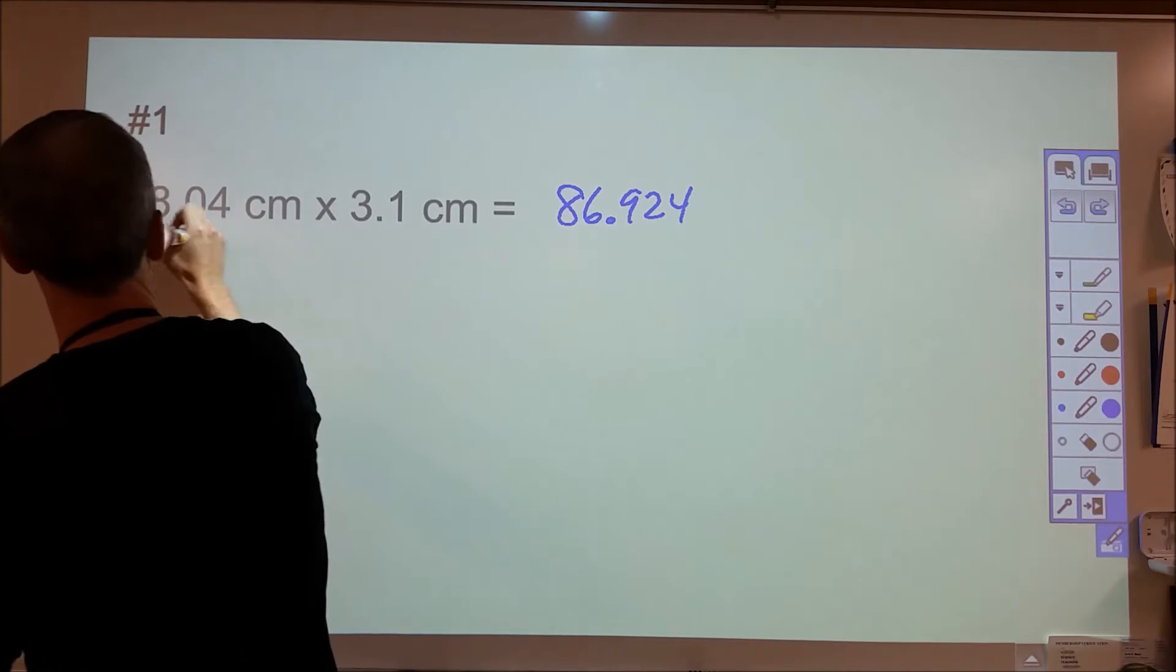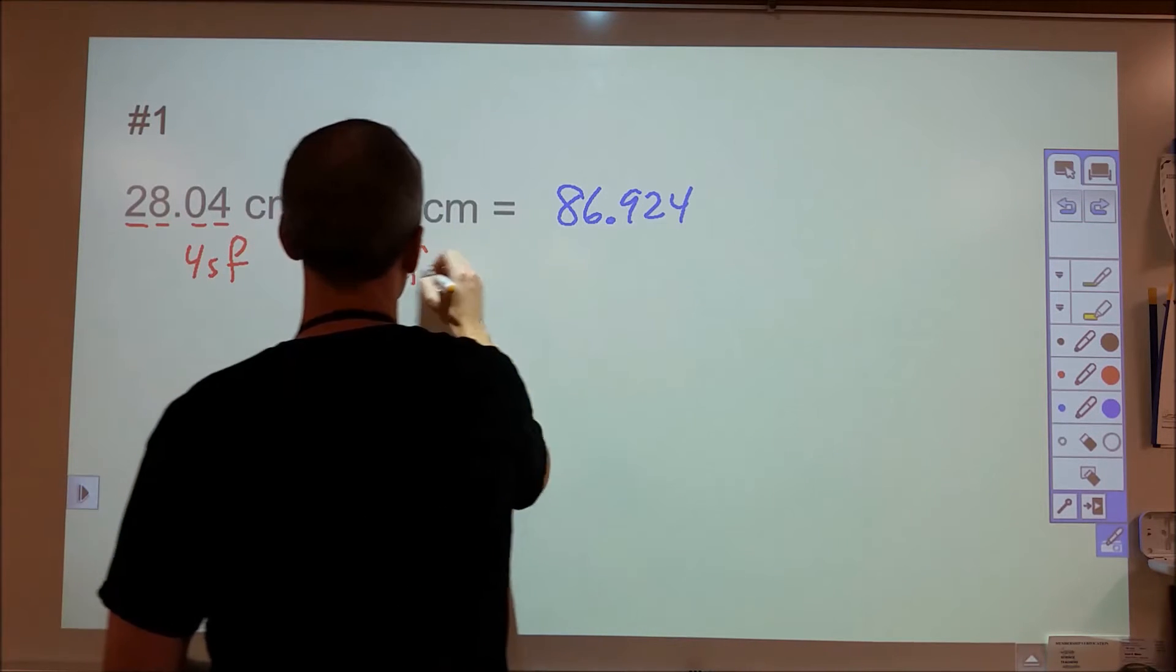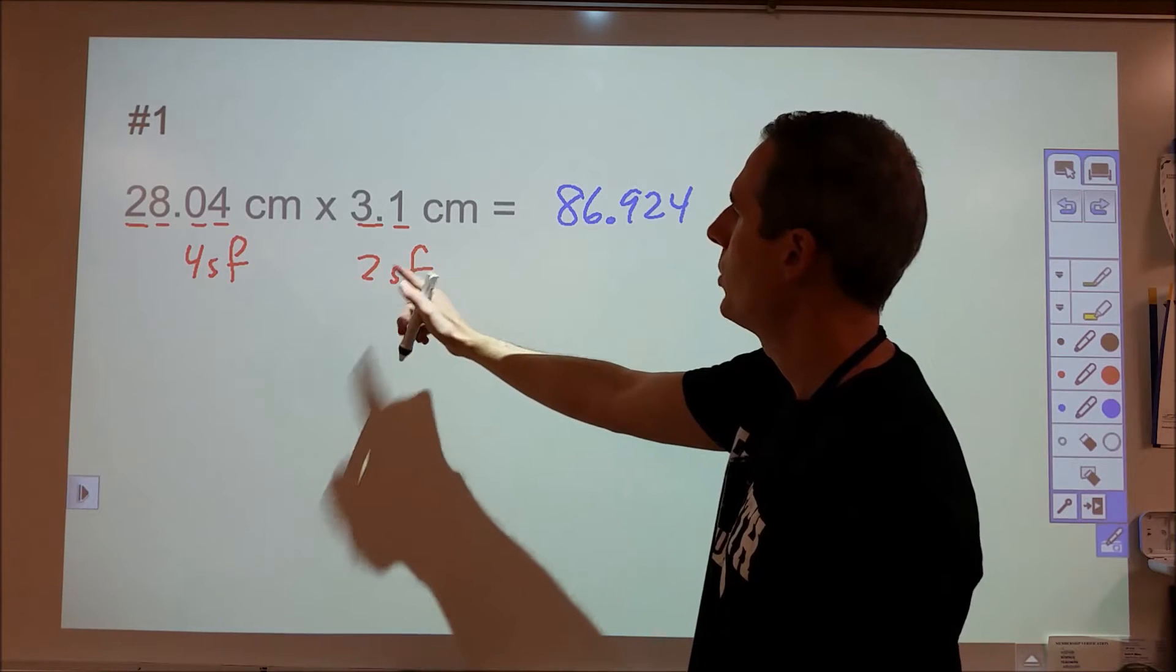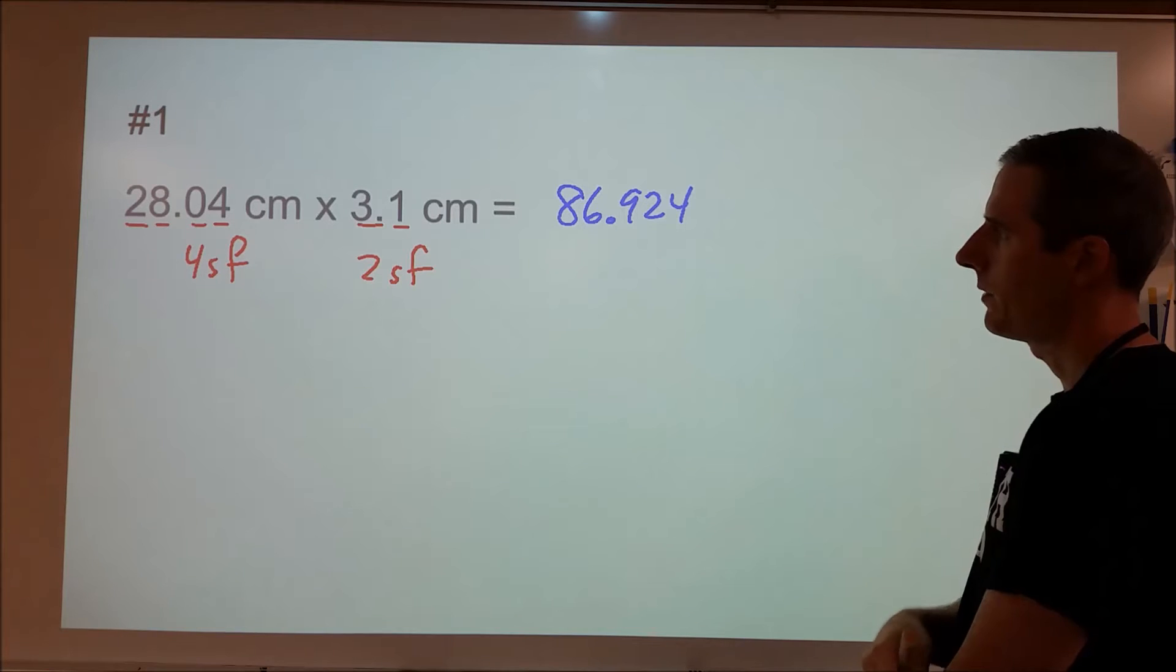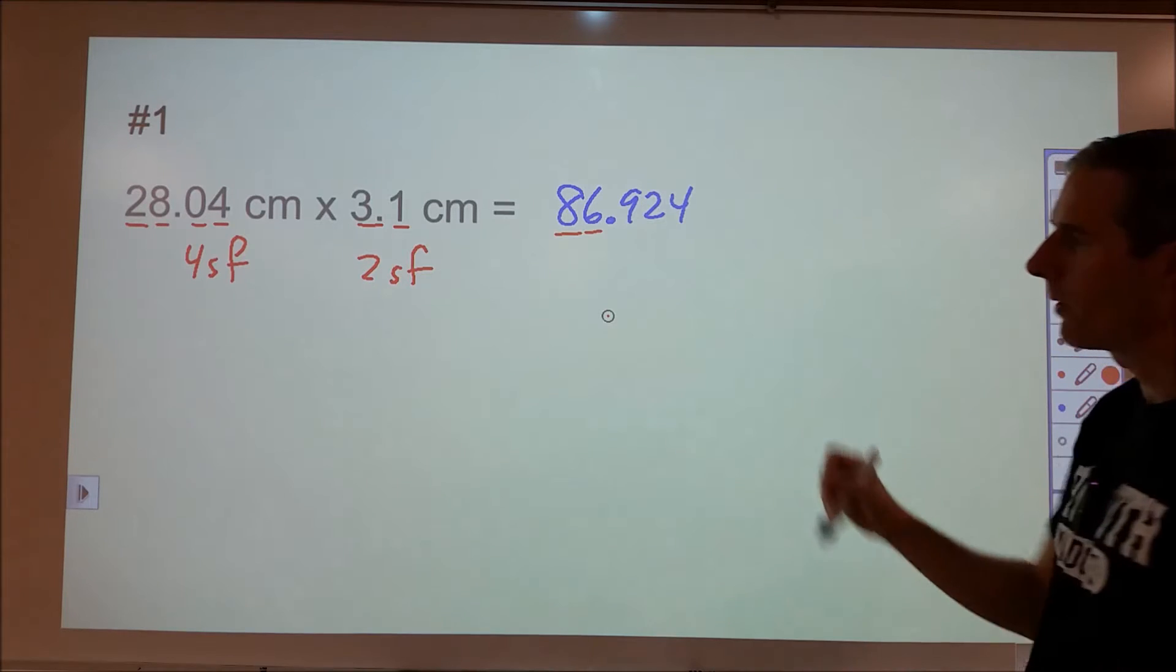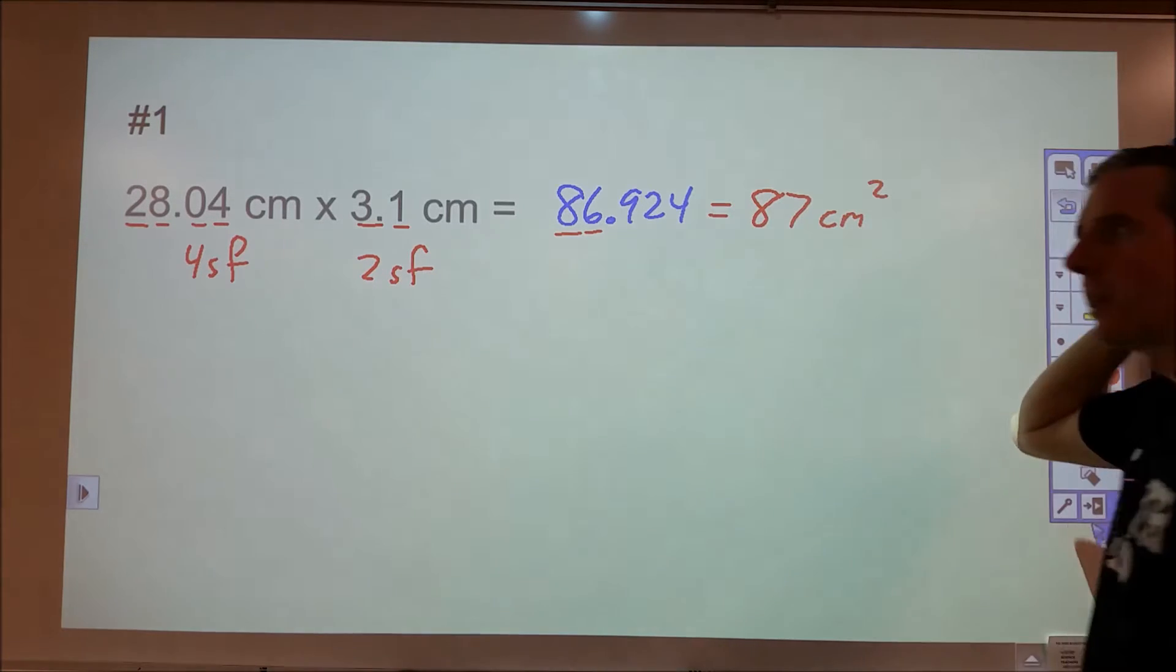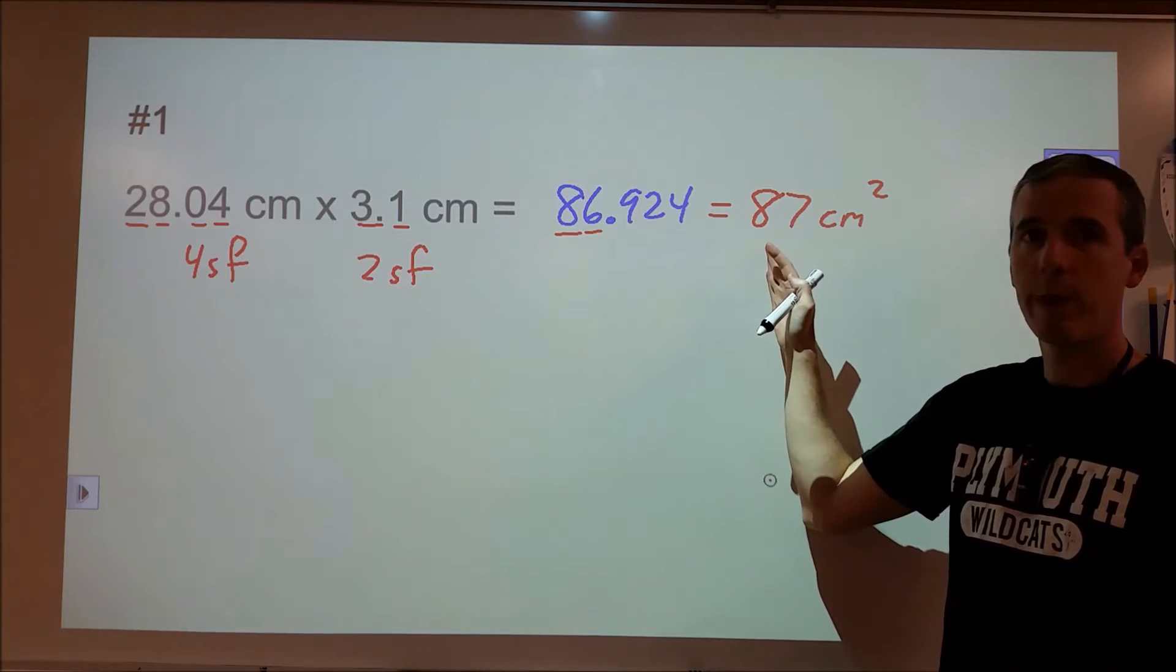Now for multiplying and dividing you count how many sig figs you have. So here we have four sig figs, here we have two sig figs. When you multiply or divide, whichever of the two measurements has the fewer number of sig figs is how many your final answer will have as well. So my final answer can only have two sig figs. So if I count once I get past the six I need to get rid of the rest of those numbers. So I'm going to round this six up to 87 with my units for centimeters squared.